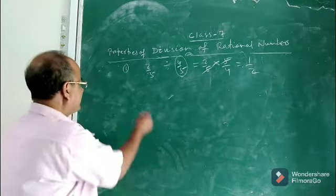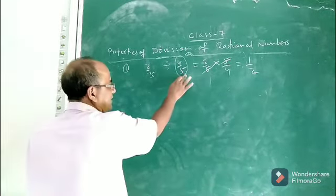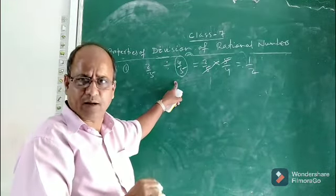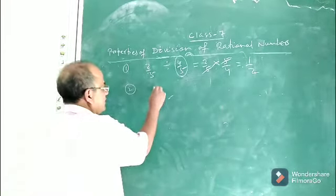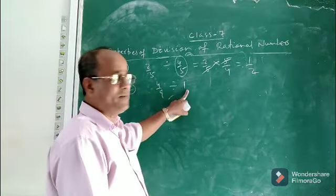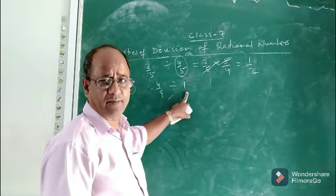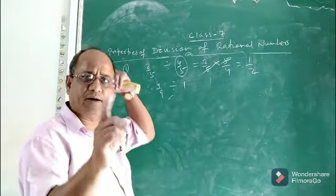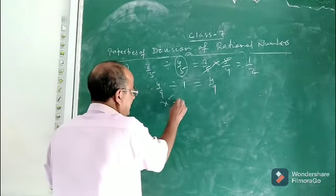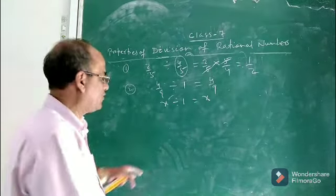Mathematically, if x and y are rational numbers, then x divided by y is also a rational number. The second property: suppose we divide a rational number 4 by 9 by 1. Any number divided by 1 gives the same number, so the result is 4 by 9. We can say x divided by 1 equals x, where x is any rational number.